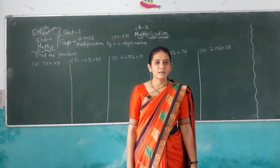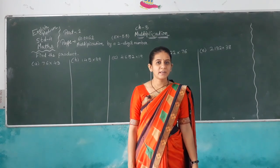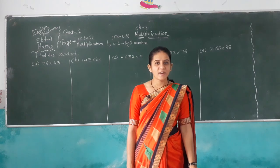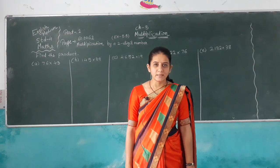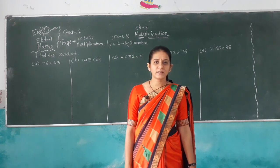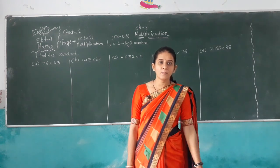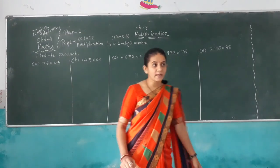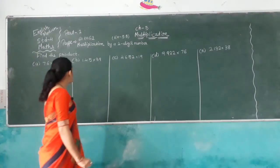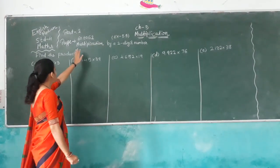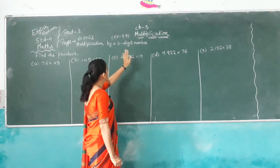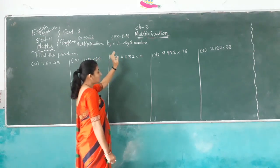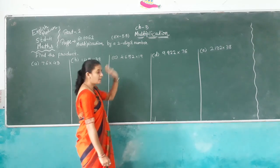Good morning students. Welcome back to Greening Men's Class Instagram 4, Chapter number 5, Multiplication. In the previous video, I covered exercise number 5.1 to 5.4. Today I am starting exercise number 5.5: Multiplication by 2-digit number.